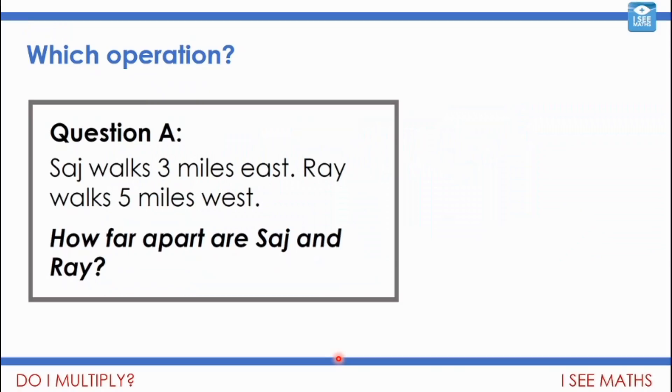Well let's have a look at this one to start off with. Saj walks 3 miles east. Ray walks 5 miles west. How far apart are Saj and Ray? Which operation is needed this time? Is this addition, subtraction, multiplication, division? Pause the video. What operation is needed?